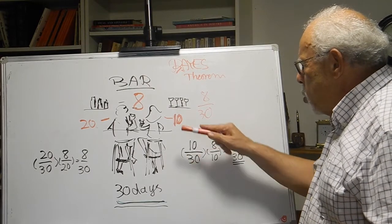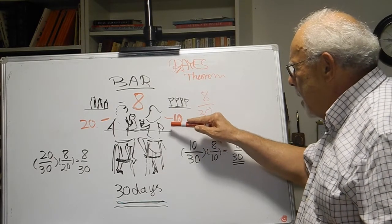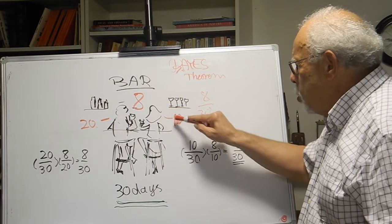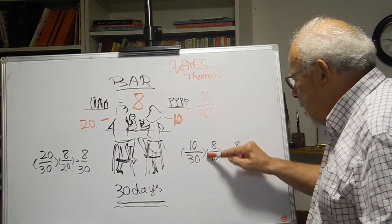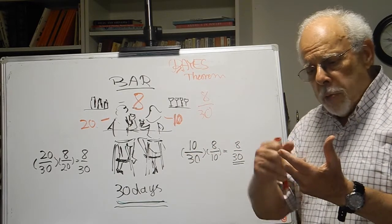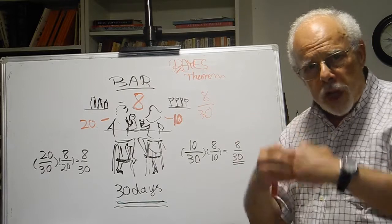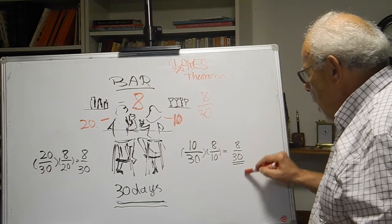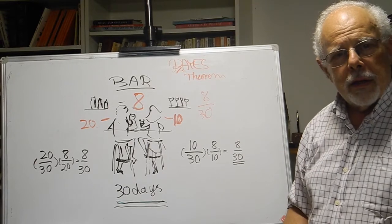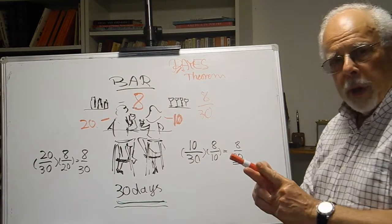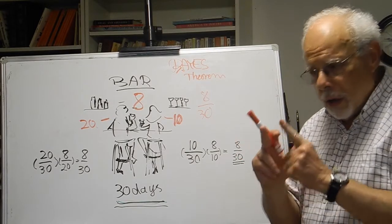Now, what is the chance that any day that she was there, he will be there too? 8 to 10. So we take this chance that she would be in the bar and multiply it by the chance that if she is in the bar, he is in the bar. And we get what we want. The chance that both of them are in the bar, same night.